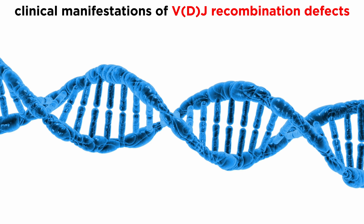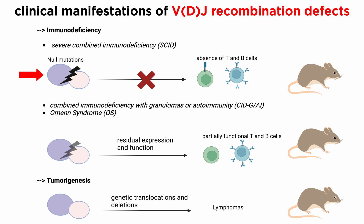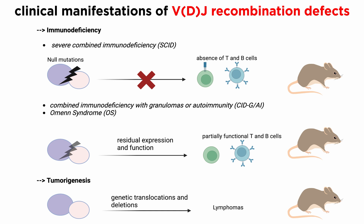Unfortunately, errors can arise during this process. They can be broadly classified into joining and recognition errors that can result in generating deleterious genomic rearrangements. Mice with disruptions of either the RAG1 or RAG2 gene are completely defective in VDJ recombination, and therefore possess no mature B or T cells. These mice have no other obvious defects, which implies that the RAG genes function only in the immune system.